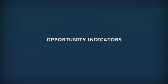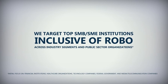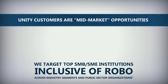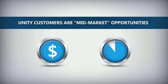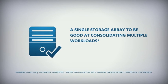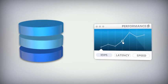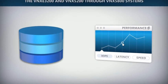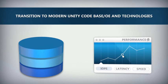Let's look at what account-specific characteristics would indicate a customer or prospect is likely to be receptive to this message. Our target customers are essentially top SMB and SME institutions, inclusive of ROBO, across industry segments and public sector organizations. Unity customers are mid-market opportunities or medium-sized enterprises with real resource and time constraints. These customers need storage to be invisible in their infrastructure, easy to manage, and just work, consolidating multiple workloads on either an all-flash or hybrid system, and are looking to transition to the modern Unity codebase and OE technologies.